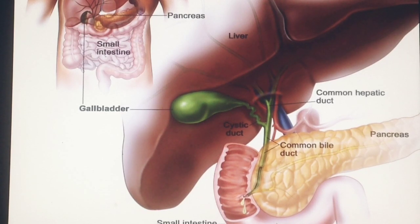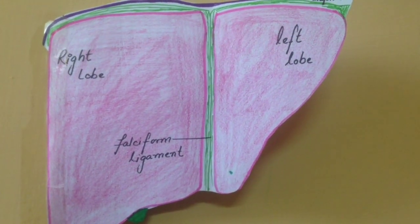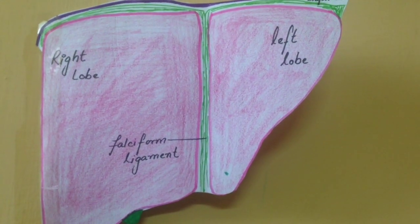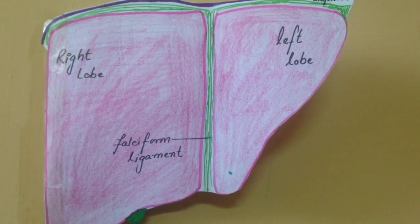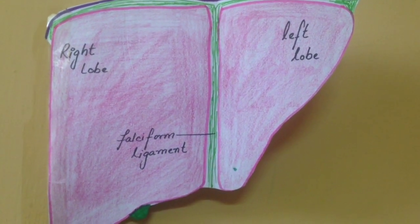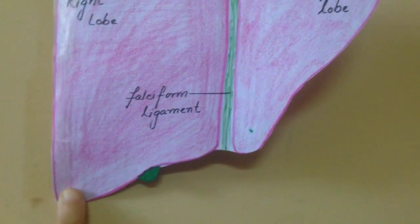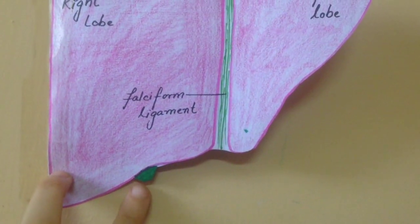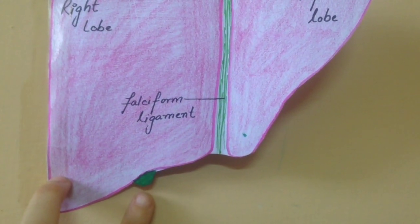For further understanding we will see it in a dichromatic picture. This is the dichromatic presentation of the liver. As you can see, the liver has a left lobe and a right lobe, which is divided by a ligament called the falciform ligament, and on the below surface you can see a small organ which is called the gallbladder.